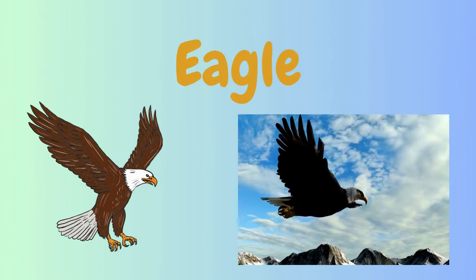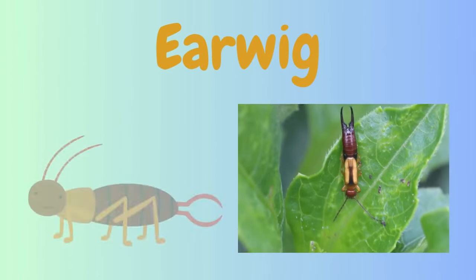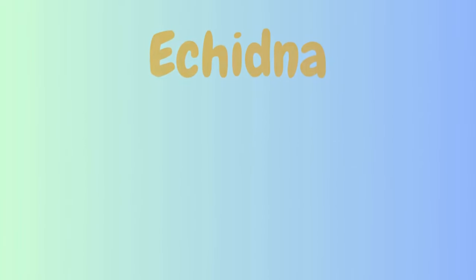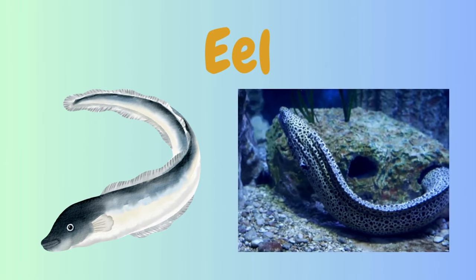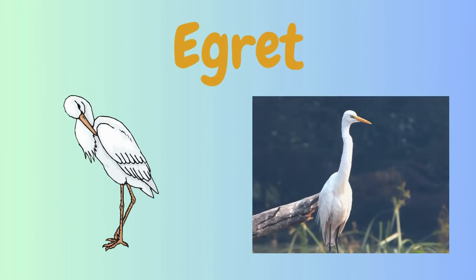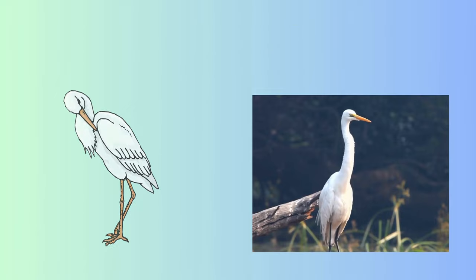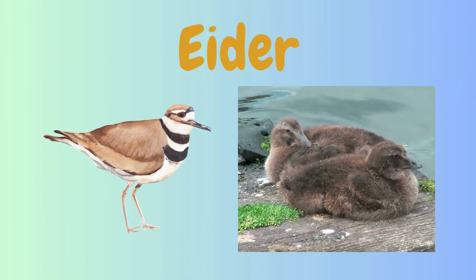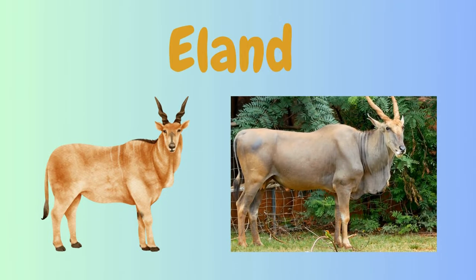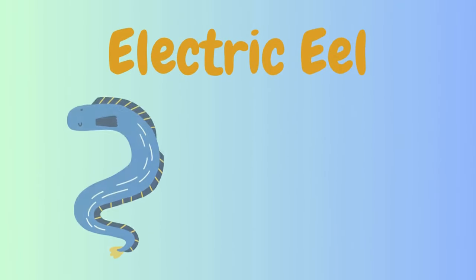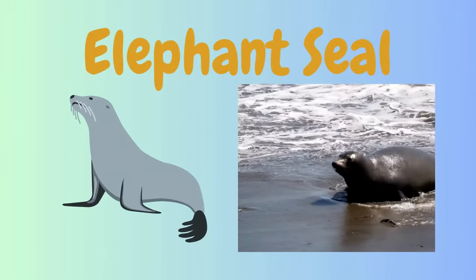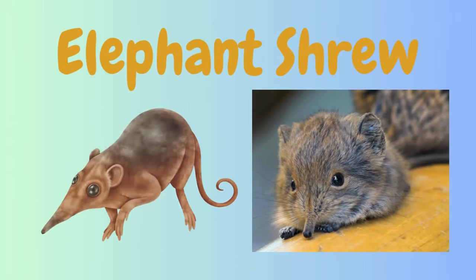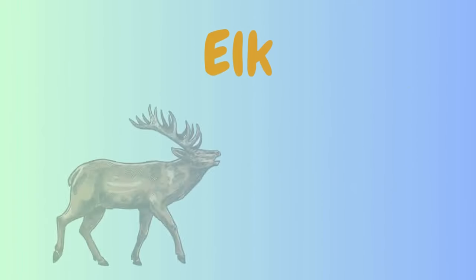Animals with Alphabet E. Eagle. Yerwig. Echidna. Heel. Ygritte. Ida. Elend. Electric Eel. Elephant. Elephant Seal. Elephant Shrew. Elk.